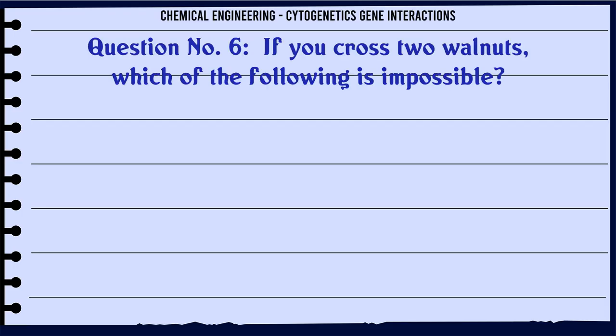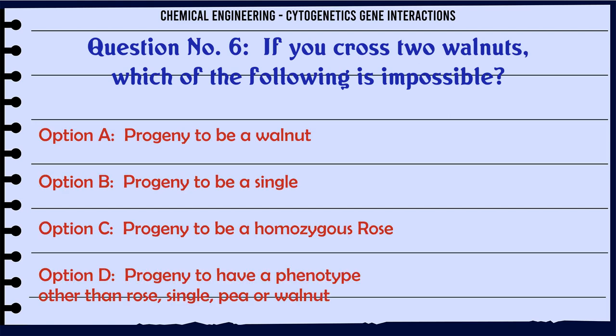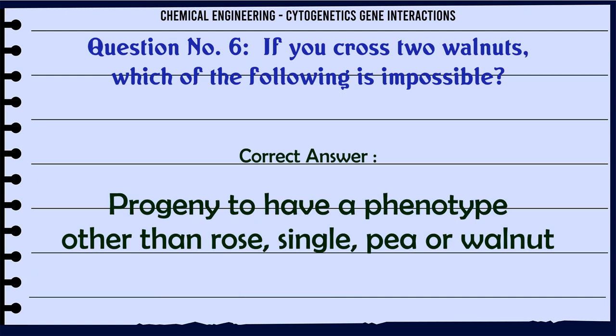If you cross two walnuts, which of the following is impossible? A. Progeny to be a walnut, B. Progeny to be a single, C. Progeny to be a homozygous rose, D. Progeny to have a phenotype other than rose, single, pea, or walnut. The correct answer is: Progeny to have a phenotype other than rose, single, pea, or walnut.